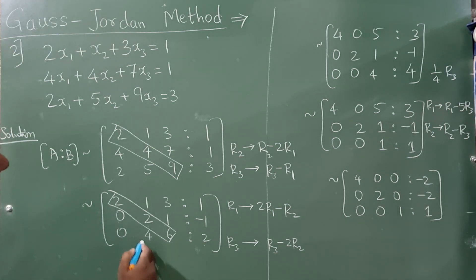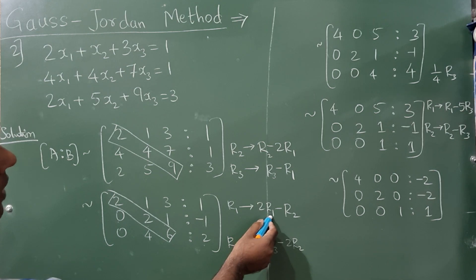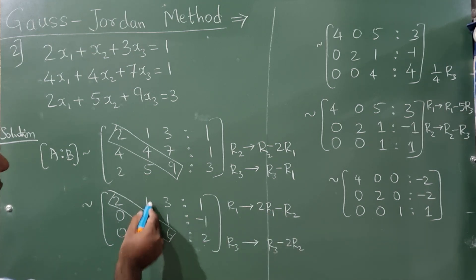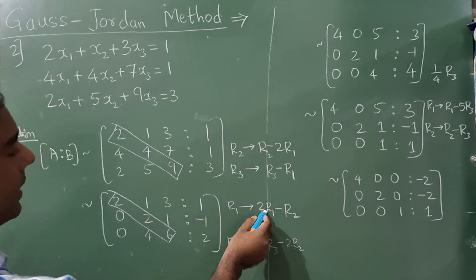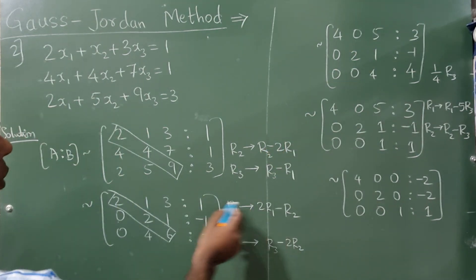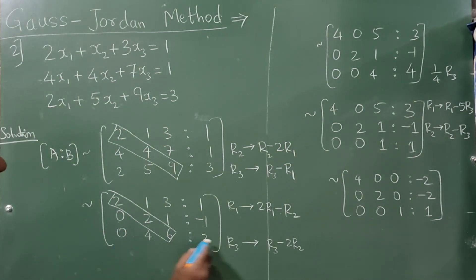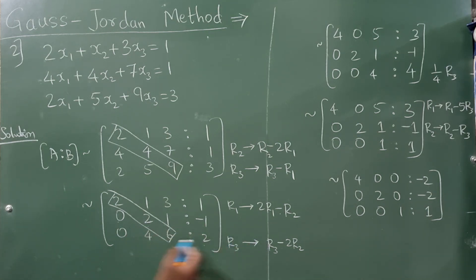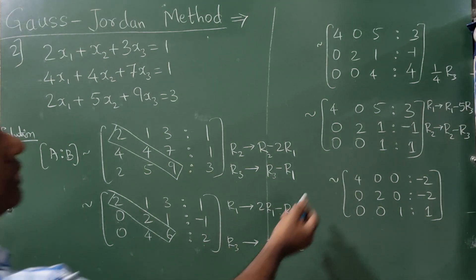Now I have to make these two elements 0. R1 becomes 2·R1 - R2: 2 - 2 = 0, and 2·2 = 4; 3·2 = 6, 6 - 1 = 5; 2·1 - (-1) = 3. Keep row 2 as it is. Row 3 becomes R3 - 2·R2: 4 - 4 = 0; 6 - 2 = 4; 2 - (-2) = 4.